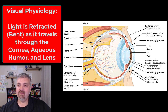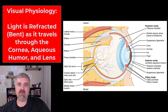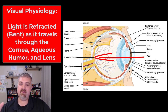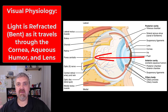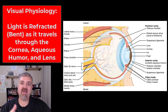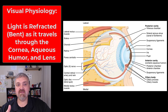Hey everybody, Dr. O here. We're going to talk about visual physiology in this video — how do we actually see? The key is that photons of light bouncing off the things we're looking at in the world have to get to our photoreceptors. We have a whole system designed to do that, and then we'll talk about what happens once those rods and cones are stimulated.